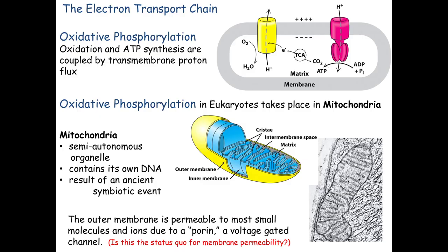To remember where we left off, look at the figure on the top right. We've already discussed the TCA cycle — the tricarboxylic acid cycle, also called the citric acid cycle or Krebs cycle. In that cycle, we generated some CO2, which has no bearing here, but we did make 3 NADH and 1 FADH2, and those molecules are carrying electrons.